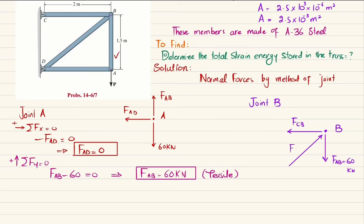The dimensions are 1.5 m and 2 m. Using a right triangle, multiplying both sides by 2 gives sides of 3, 4, and 5. This 3-4-5 triangle defines the ratio of the sides, so the hypotenuse is 5, the vertical side is 3, and the horizontal side is 4.